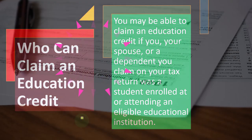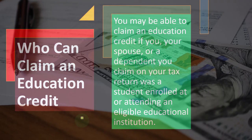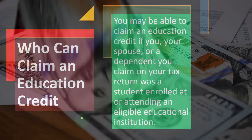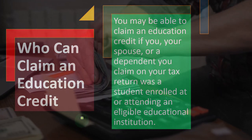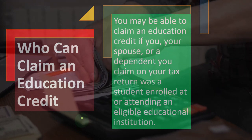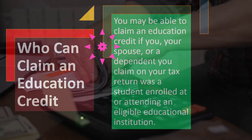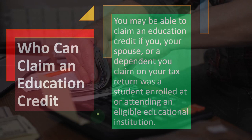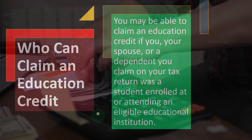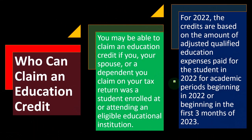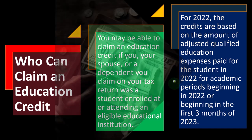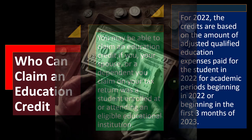Who can claim an education credit? You may be able to claim an education credit if you, your spouse, or a dependent you claim on your tax return was a student enrolled at or attending an eligible educational institution. For 2022, the credits are based on the amount of adjusted qualified education expenses paid for the student in 2022 for academic periods beginning in 2022 or beginning in the first three months of 2023.